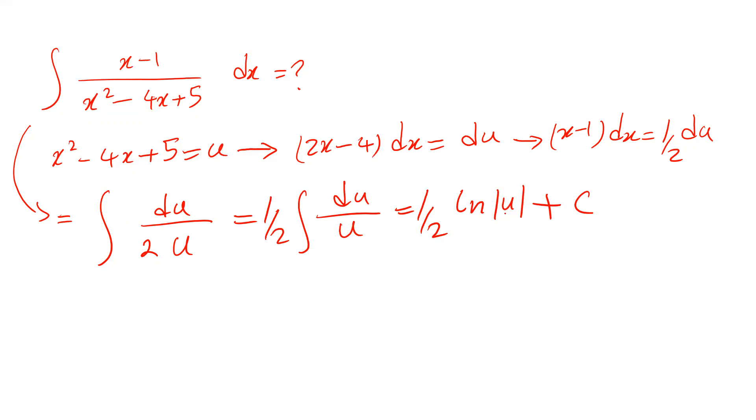All you need to do is substitute the parameter u with its definition. Therefore, this integral equals 1/2 ln|x² - 4x + 5| + C, where C is the constant of integration, and this is the solution to our integral.